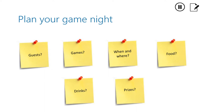Then decide when you are going to have that gathering and where it is going to take place. What are you going to do about food and drinks? Are you going to order pizza and prepare snacks, or arrange with your guests to bring something themselves? Are you going to give out prizes for the winners? What are those prizes going to be and how are you going to organize that? You can write your plan as notes to help you prepare.